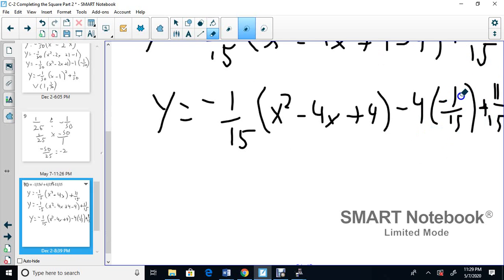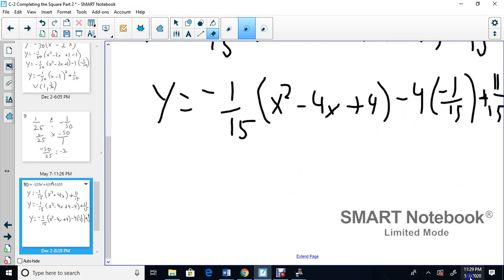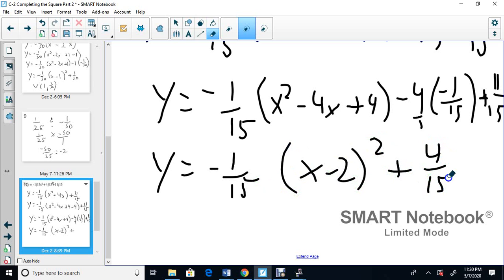So negative 4 times 1 is just 4. You only multiply the top. So when you multiply, this is like over 1. So like 1 times 15 and 4 times 1. So here you get y equals negative 1 over 15. Over here, you get x minus 2 squared. And over here, you get plus, because it's 2 negatives, 4/15, plus 11/15.